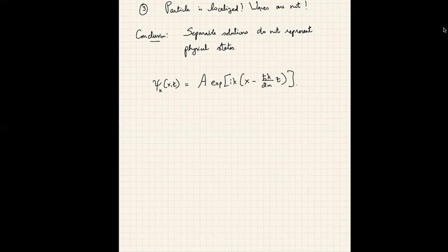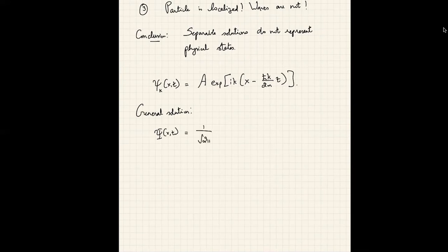This is not the most general solution. The most general solution is a linear combination of all separable solutions. If the energy is discrete, the linear combination is a sum; if the energy is continuous — as in the free particle — the linear combination is an integral over the continuous variable k. The general solution of the free particle is: Ψ(x,t) = (1/√(2π)) ∫_{−∞}^{∞} φ(k) e^(i(kx − ħk²/2m · t)) dk.